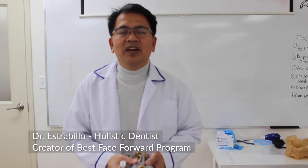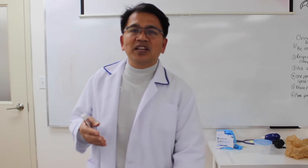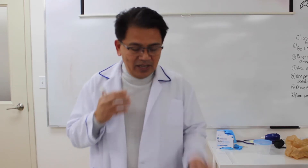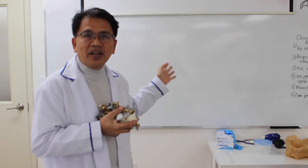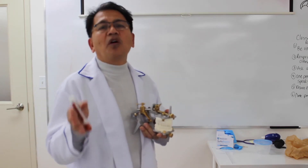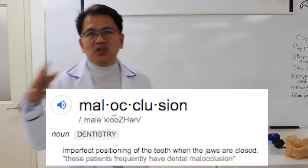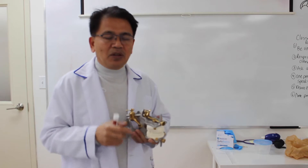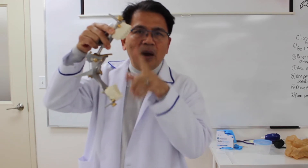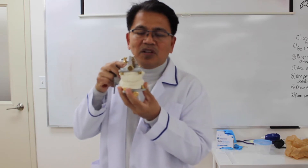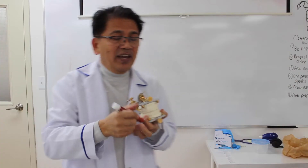We're going to talk about different kinds of occlusions — in layman's terms, different kinds of bite. That is the relationship of the upper jaw to the lower jaw. I'm going to use this sample right here to demonstrate what that looks like, and I'll draw on the board to show the different occlusions. Anything varying from a good Class 1 occlusion is called a malocclusion. So occlusion is the relationship of the lower jaw to the upper jaw.